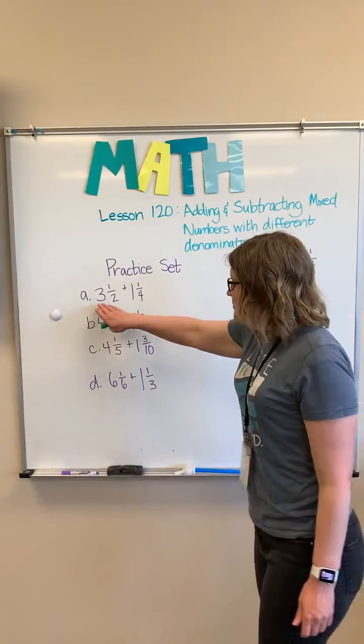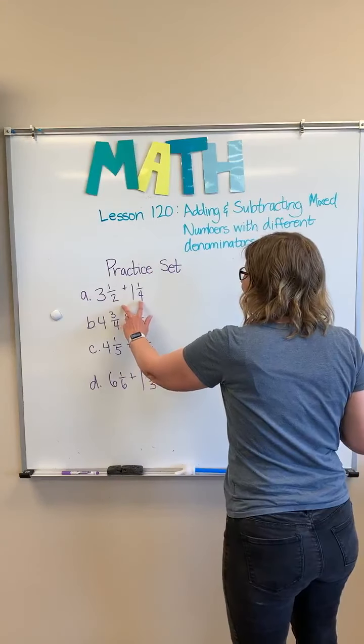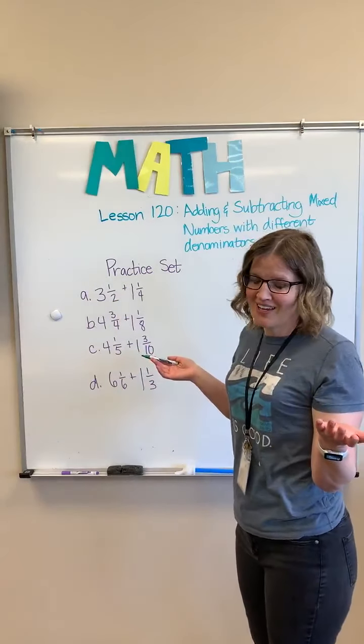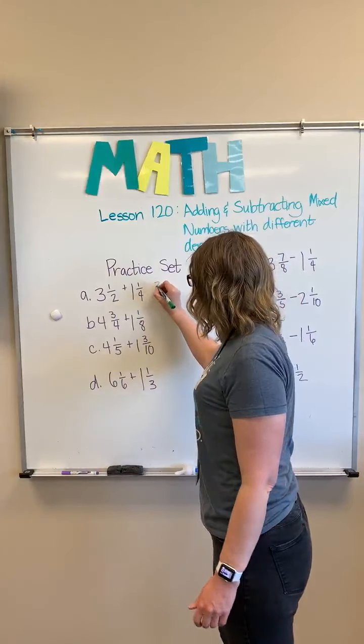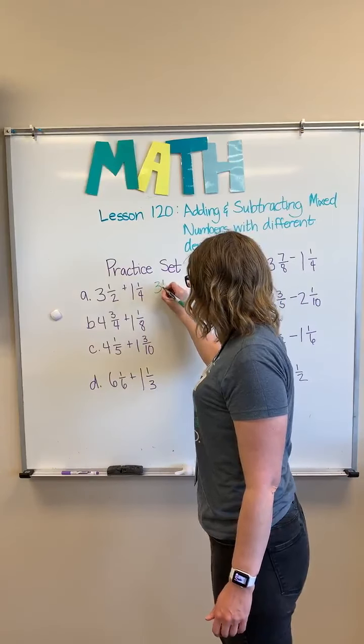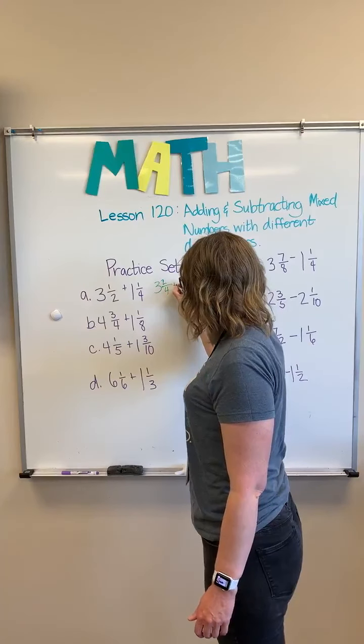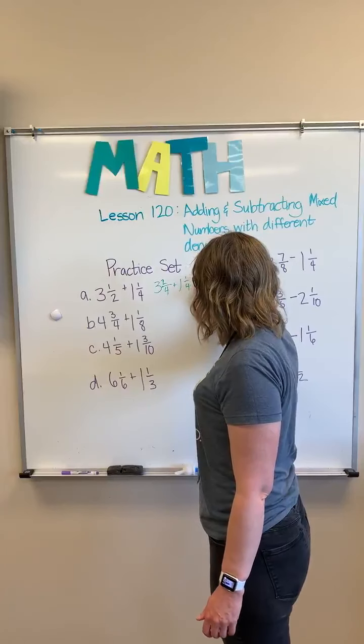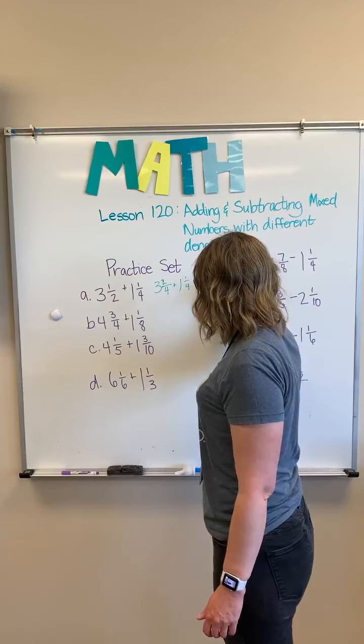Our first one: three and one half plus one and one fourth. I'm looking at this and I know that I can change one half to something that has a denominator of four, and that would be three and two fourths plus one and one fourth, and that gives me four and three fourths.